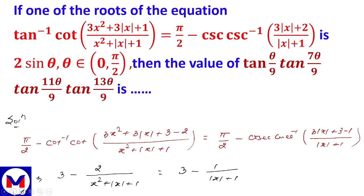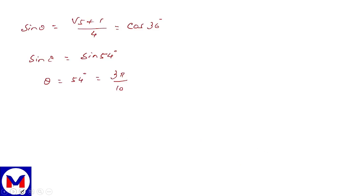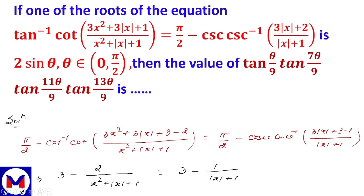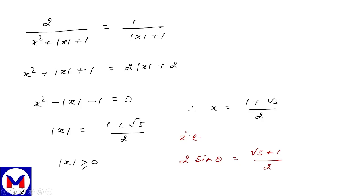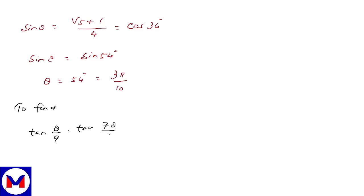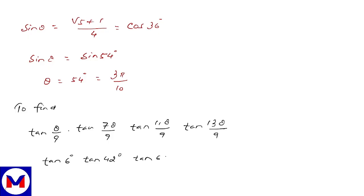Now we need to find the product tan(θ/9) · tan(7θ/9) · tan(11θ/9) · tan(13θ/9). With θ = 54°, the angles become: θ/9 = 6°, 7θ/9 = 42°, 11θ/9 = 66°, and 13θ/9 = 78°. So the product is tan6° · tan42° · tan66° · tan78°.